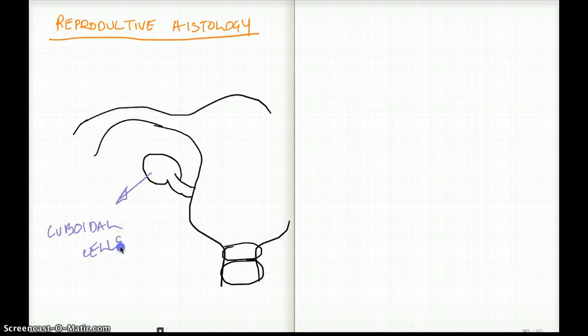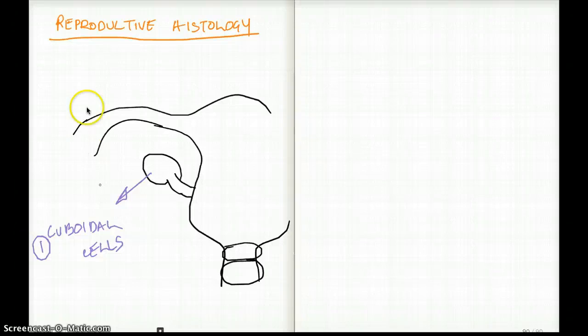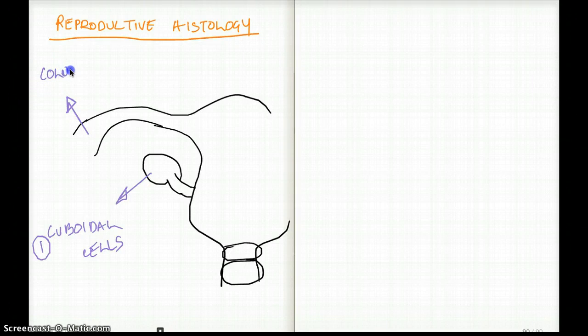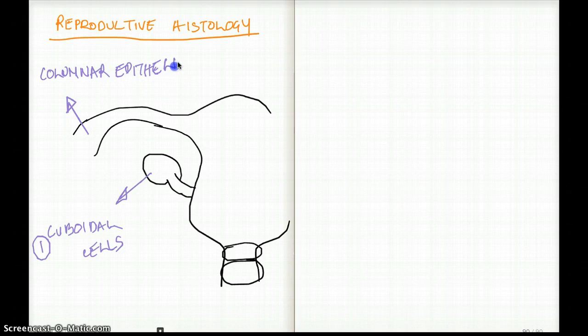So first we're going to see number one, cuboidal cells. And then now let's talk about the fallopian tube. Remember, it's a tube. A tube is like a column, right? So obviously, the next thing we're going to see in the fallopian tube is columnar epithelium. That's my number two.